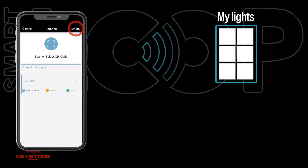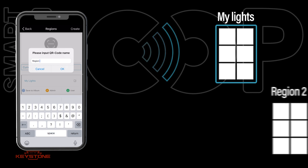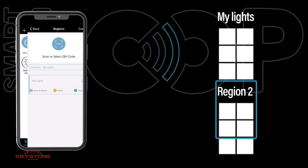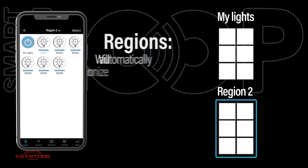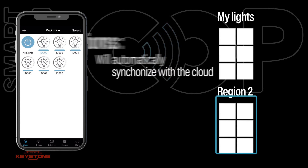To make a new region, press Create and enter a name for it. The app will switch to this new region and generate and store the QR codes on your device's photo album. It will automatically synchronize with the cloud as long as an internet connection is available.